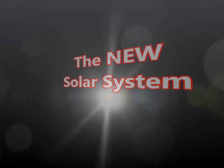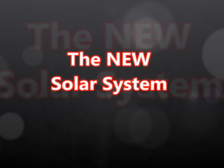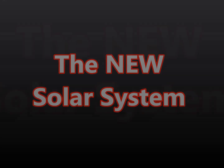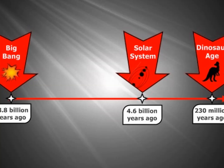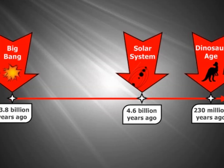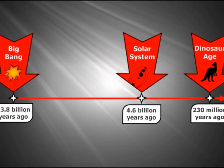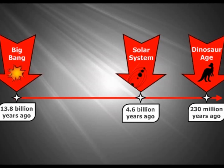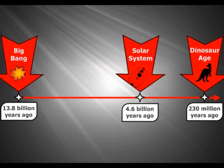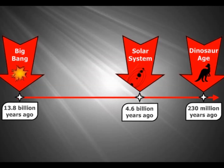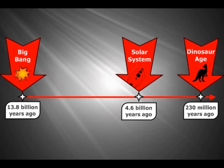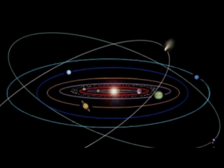This edition of Timeline presents the New Solar System. The formation of our solar system is situated on the timeline at 4.6 billion years ago. To put this in perspective, the Big Bang occurred 13.8 billion years ago and the dinosaur age began about 230 million years ago.